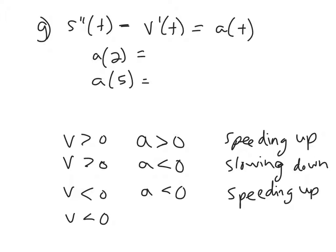If velocity is less than zero but acceleration is positive, you're moving backward while acceleration pushes forward, so you're slowing down. It's the same idea as braking a car — you're going forward but the braking accelerates you in the opposite direction, causing you to slow down.